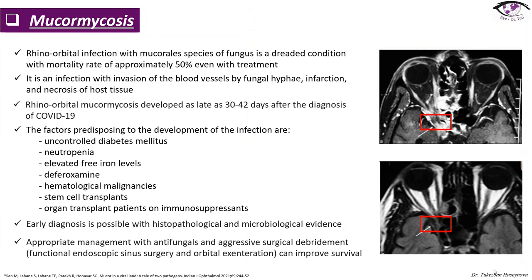Mucormycosis is a rhinoorbital infection with Mucorales species of fungus — a dreaded condition with a mortality rate of approximately 50% even with treatment. It involves invasion of blood vessels by fungal hyphae with infarction and necrosis of host tissue. Cases developed as late as 30 to 42 days after diagnosis of COVID-19. Factors predisposing to this disease include uncontrolled diabetes mellitus, neutropenia, elevated free iron levels, deferoxamine, hematological malignancies, stem cell transplants, and organ transplant patients on immunosuppressants. Early diagnosis is possible with histopathological and microbiological evidence, and appropriate management with antifungals and aggressive surgical debridement can improve survival.